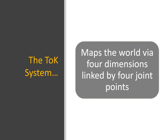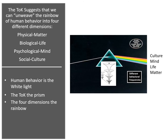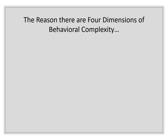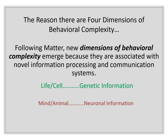The Tree of Knowledge System also divides the world into four dimensions linked by four joint points. The Tree of Knowledge suggests we can unweave the rainbow of human behavior into the physical matter, biological life, psychological mind, and socio-cultural dimensions of existence. New dimensions of behavioral complexity emerge as a function of novel information processing and communication systems. With life, we have cells processing genetic information. With mind, we have animals communicating and processing neuronal information. And with culture, we have persons communicating and processing symbolic information.